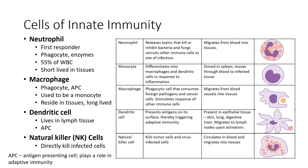And then finally we have natural killer cells. These are a type of lymphocyte that are innate immune system cells. They will directly kill a cell that's infected with a virus, an intracellular bacteria, or a tumor cell. Natural killer cells are found circulating in the blood and they migrate into the tissues when needed.